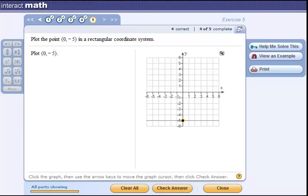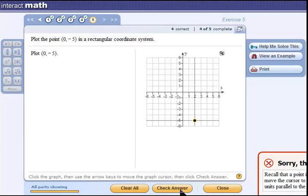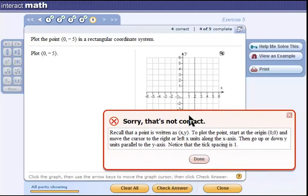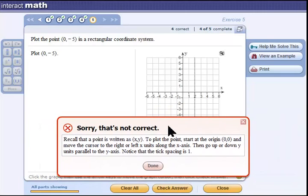Oops, what does it say here? 'Sorry, that's not correct. Recall that a point is written as (x,y). To plot the point, start at the origin (0,0)' - that's the center - 'and move the cursor to the right or the left.' Ah, here it is. Yes, I just realized I was out of the bounds of the video. You'll get instructions right here.